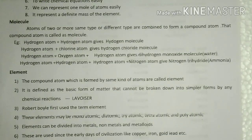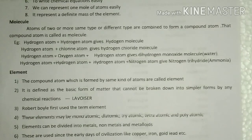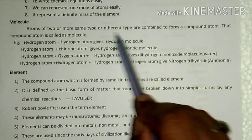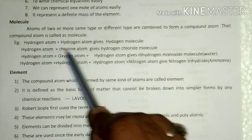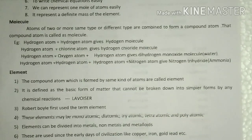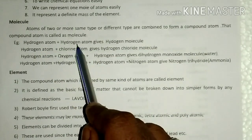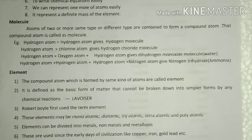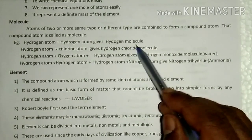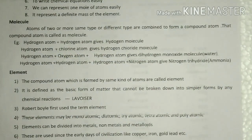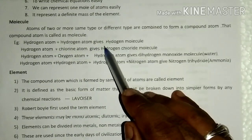Generally, we already know hydrogen molecule, oxygen molecule, hydrogen chloride molecule, and ammonia — different kinds of molecules we are going to encounter in chemistry. How are they formed? The hydrogen molecule is formed by the combination of hydrogen atom and hydrogen atom. That means, molecules are formed by the combination of atoms.